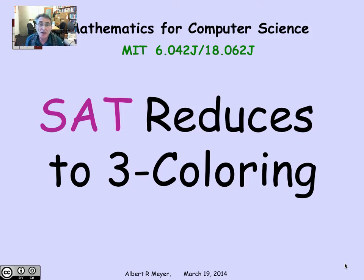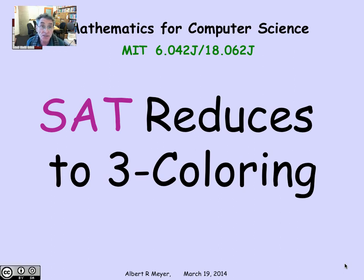We've talked a bunch of times about the satisfiability problem, and we saw one example of using it — the ability to determine whether a propositional formula or a digital circuit was satisfiable, or able to produce an output of true. If we could do that, then we could, for example, factor a product of two primes, which we believe is hard and which is the basis for thinking that the RSA cryptosystem is secure. Lots of other problems that we think are hard would become easy if only we could find a good way to check for satisfiability, which is why everybody thinks that satisfiability is hard.